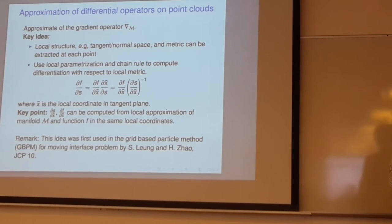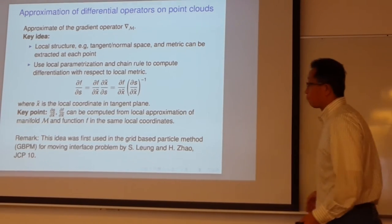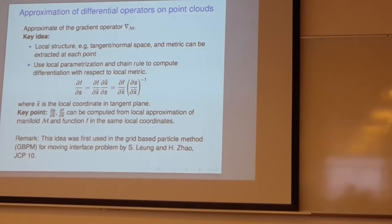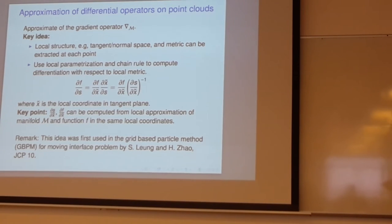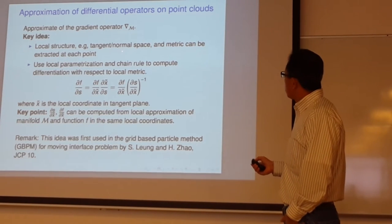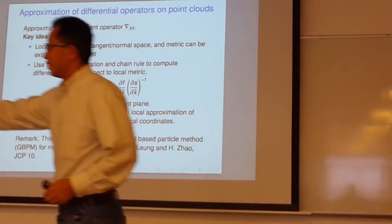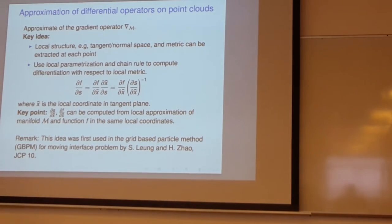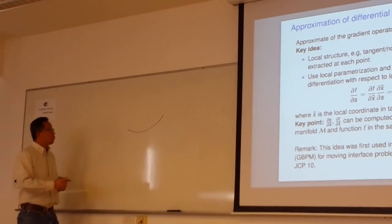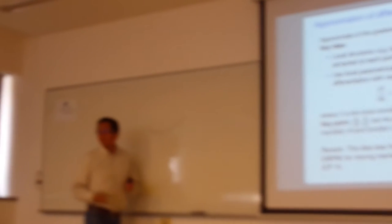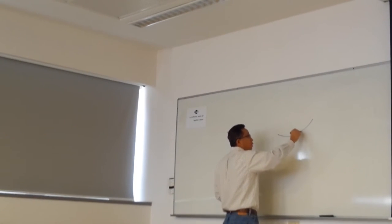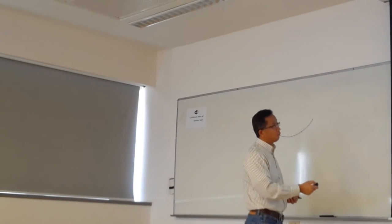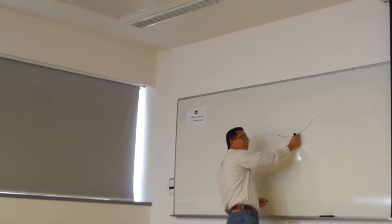The idea is very simple. Say your manifold is a 1D curve and you have a function defined on it. The intrinsic differential operator is the rate of change of the function with respect to arc length — not the Euclidean distance between points. So you only need partial F partial S. But if I can locally apply PCA through the k-nearest neighbors, I can roughly find a tangent space without it being perfectly tangent.